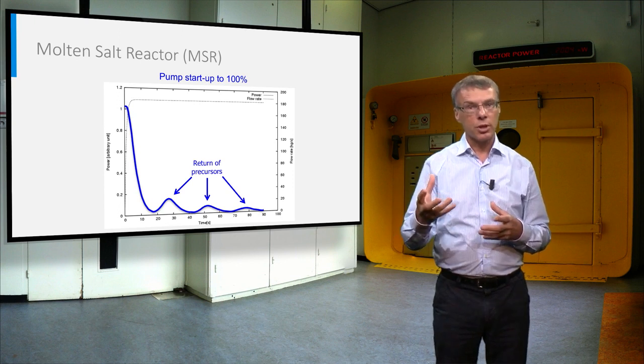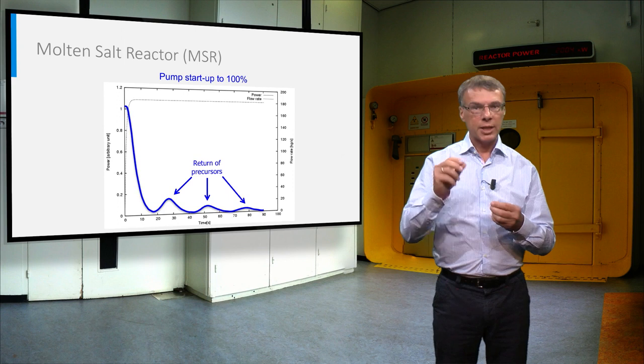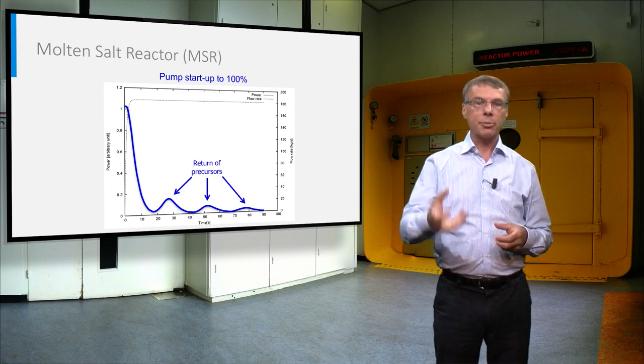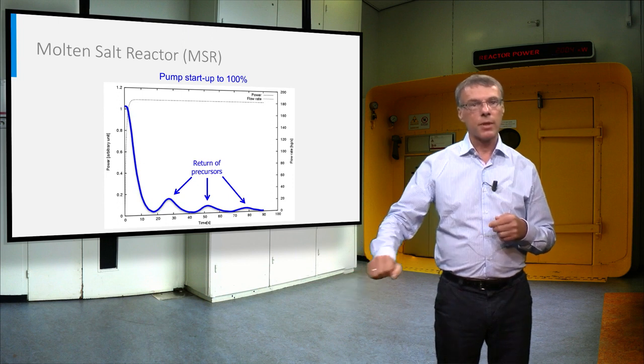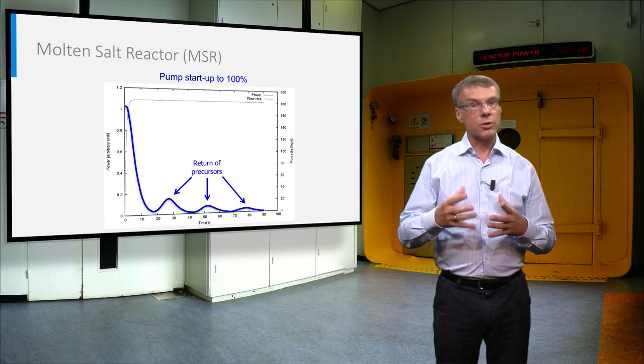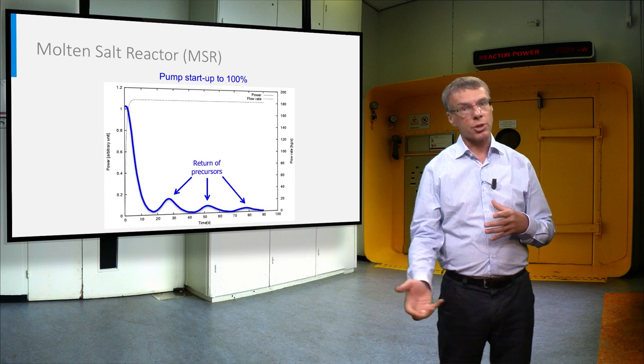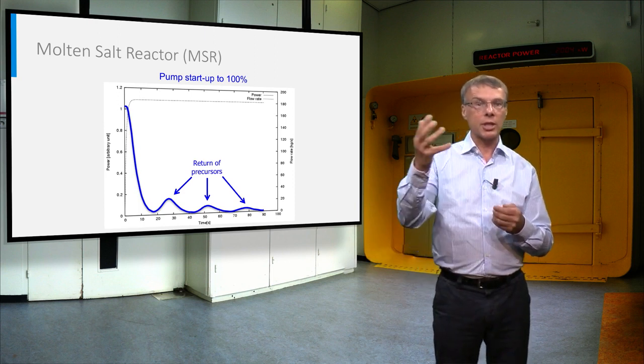Because the precursors, these are the fission products that release a neutron after beta decay, are expelled from the reactor core, the reactor power decreases sharply. If after some tens of seconds the remaining precursors return to the reactor core, the reactor power increases again.